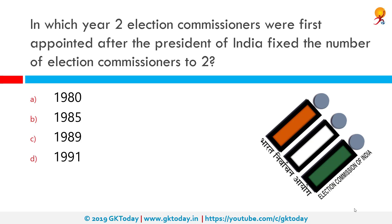In which year were two election commissioners first appointed after the President of India fixed the number of election commissioners to two? The correct answer is 1989. The current commission was established in 1950. Membership increased on 16 October 1989 to three commissioners. That commission ceased on 1 January 1990 when the Election Commissioner Amendment Act of 1989 superseded the earlier commission, and it continues in operation today.